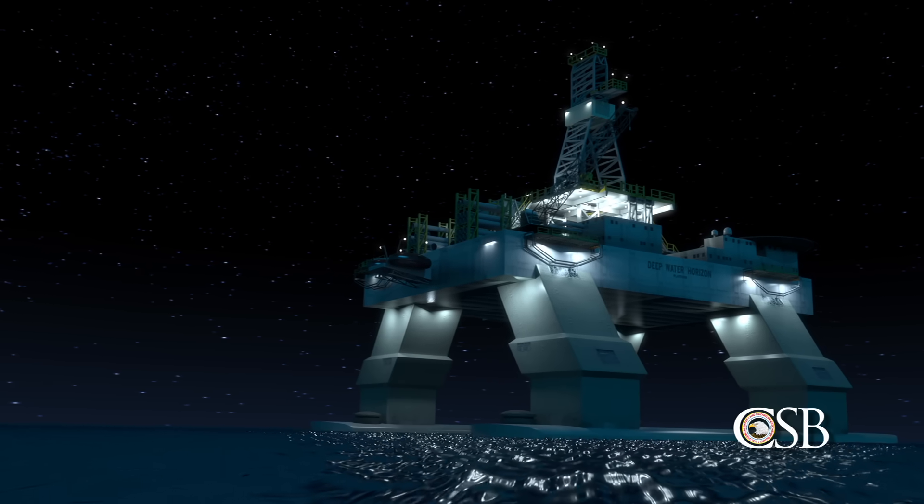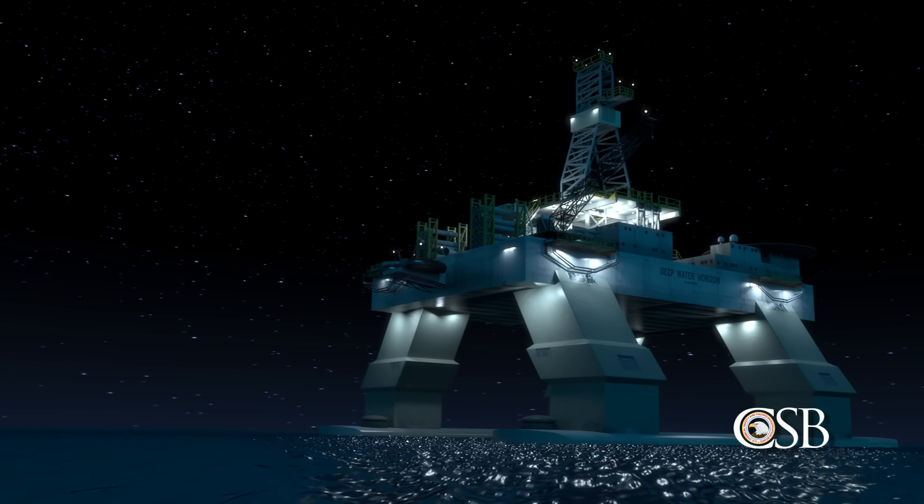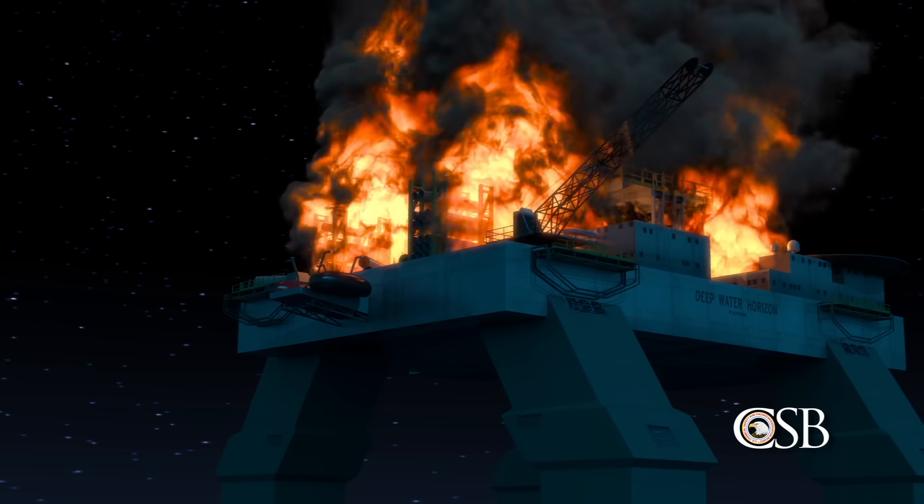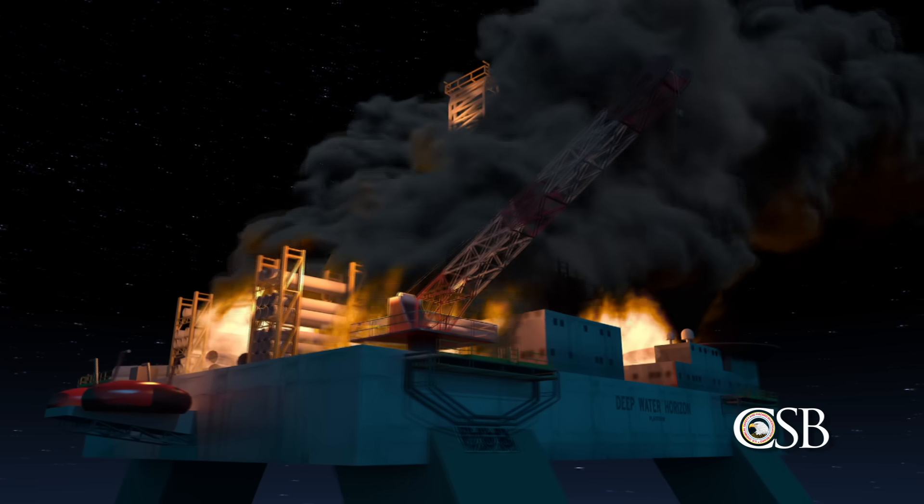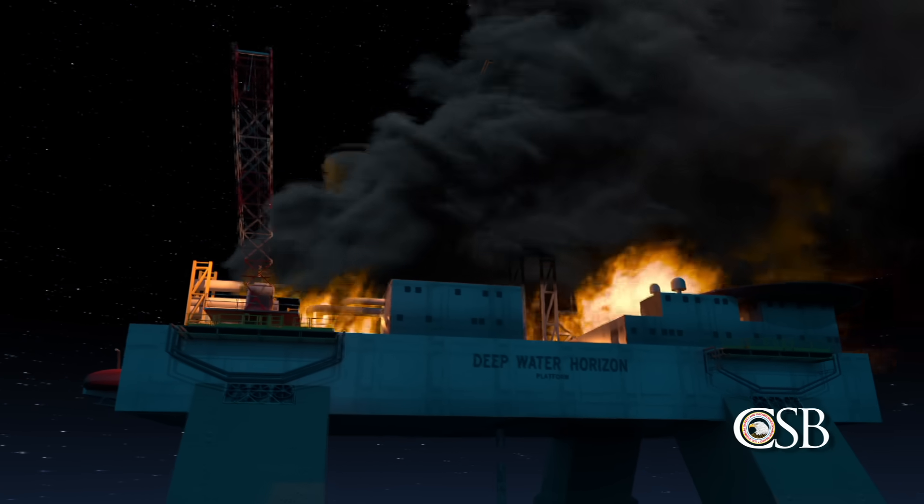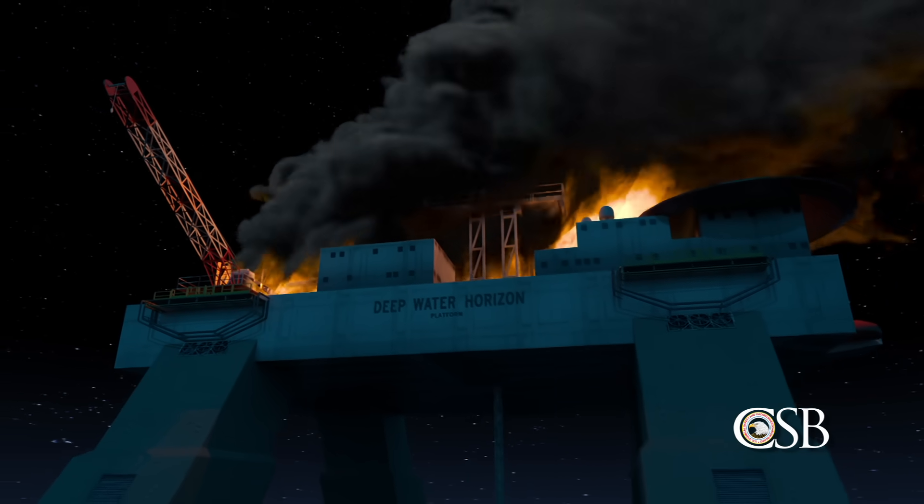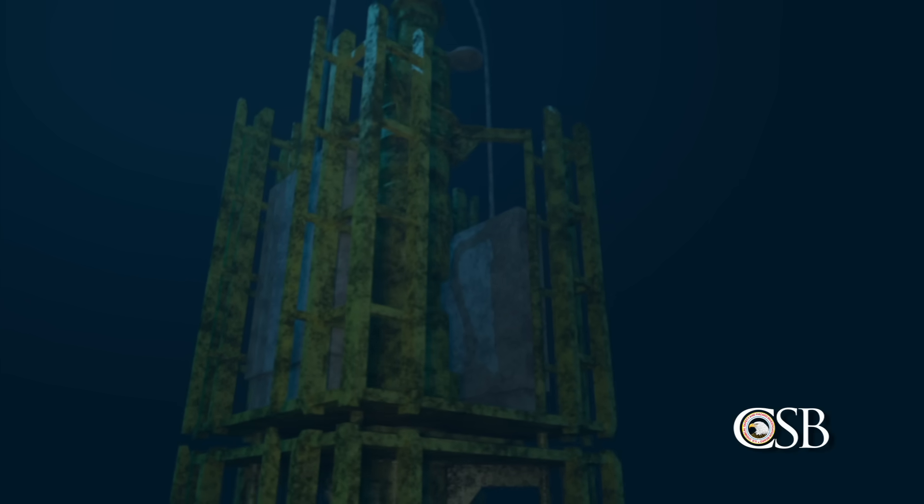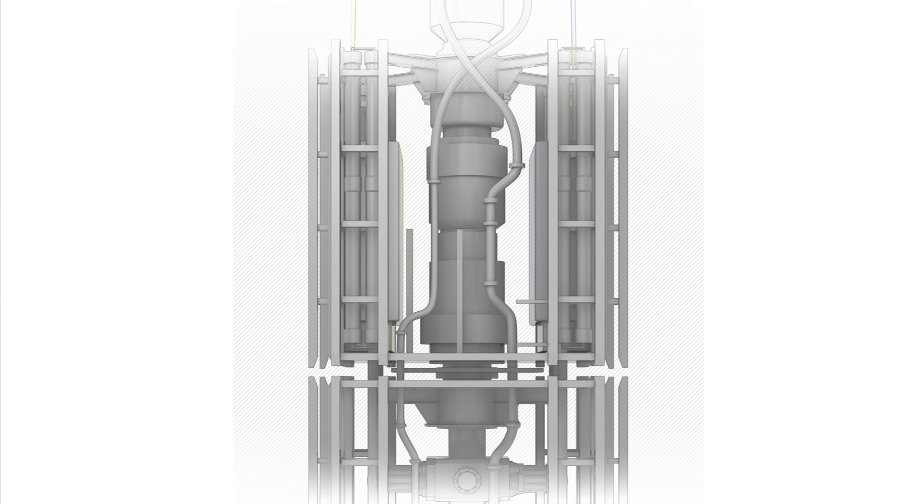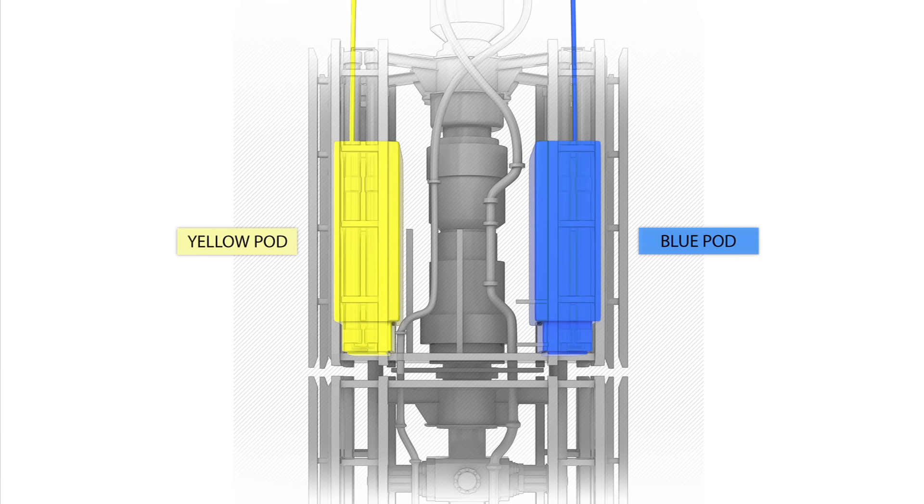At approximately 9:49 p.m., the flammable hydrocarbons found an ignition source when the first explosions shook the Deepwater Horizon. With the drill pipe buckled, the explosion and subsequent loss of electrical and hydraulic power from the rig likely activated an automated system on the blowout preventer known as the AMF dead man, which closes the blind shear ram and cuts the drill pipe. This emergency system is designed to activate when electric power, hydraulic pressure, and communications from the rig have been lost. The AMF dead man system was operated by two redundant control systems on the BOP, known as the yellow pod and the blue pod. The redundancy is supposed to increase the reliability of the system in an emergency situation.